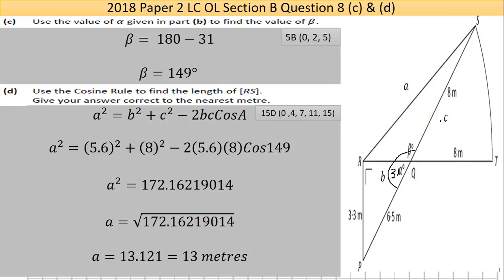Pythagoras won't work because it's non-right angled, sine cos tan won't work because it's non-right angled. The only rules left are sine rule and cosine rule. They're telling you to use the cosine rule so that helps things out.